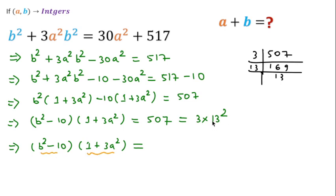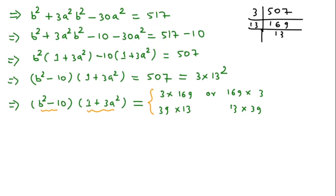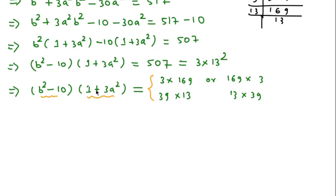We can write 507 as 3 × 169 or 13 × 39. So (b² − 10) may be 3 and (1 + 3a²) may be 169, or (b² − 10) may be 39 and (1 + 3a²) may be 13. We can also consider 169 × 3 and 13 × 39. It's important to determine which factor goes where, since a and b are integers.